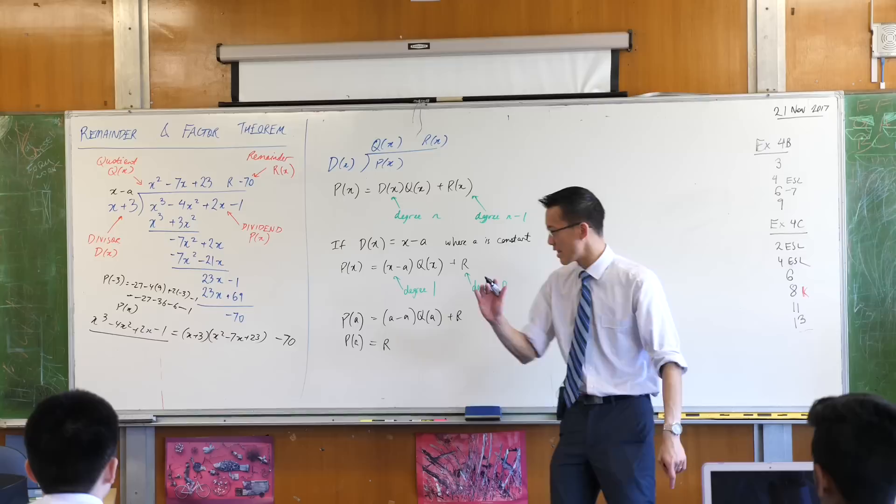But first, let's state this, because this thing here, this really simple thing. This is what we call the remainder theorem. If you want to get to the remainder rapidly of a monic linear divisor like this, then all you have to do is put in the appropriate value and the remainder just pops out.